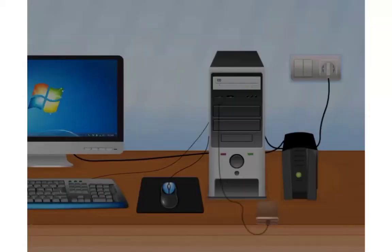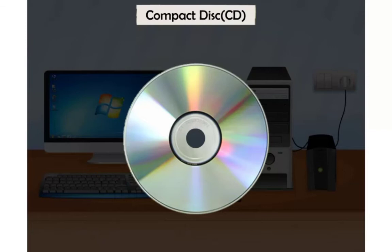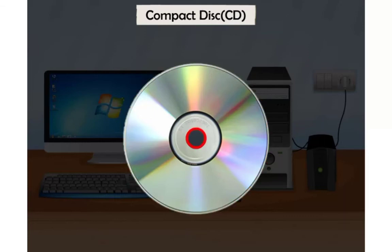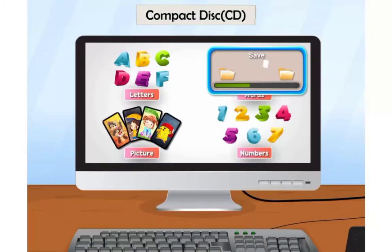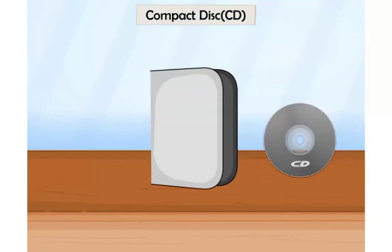Compact Disk: A CD is an external storage device. It is round in shape and has a hole in the center. It has a shiny surface on one side. You can use a CD for saving games, music, videos, and data. It is easy to carry from one place to another.